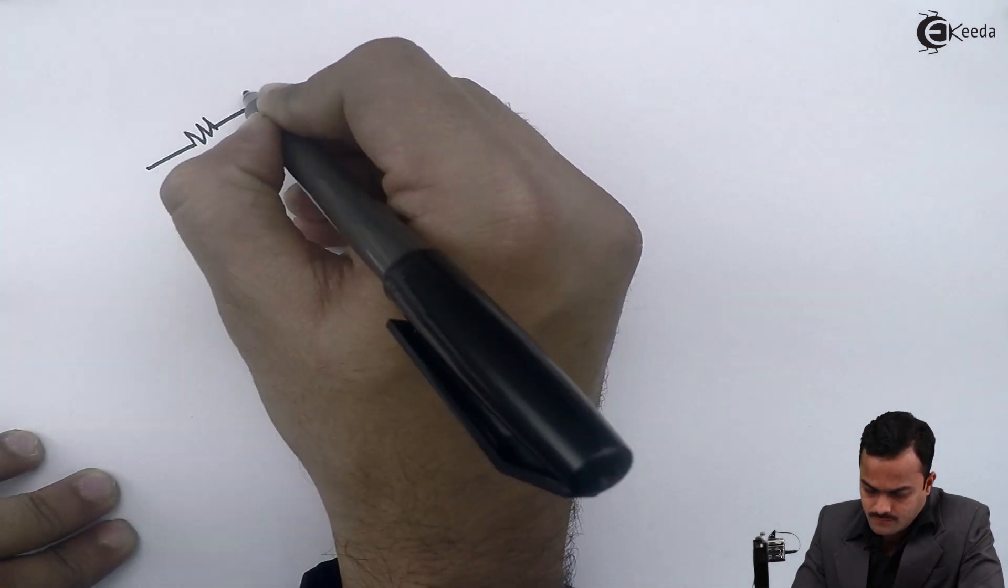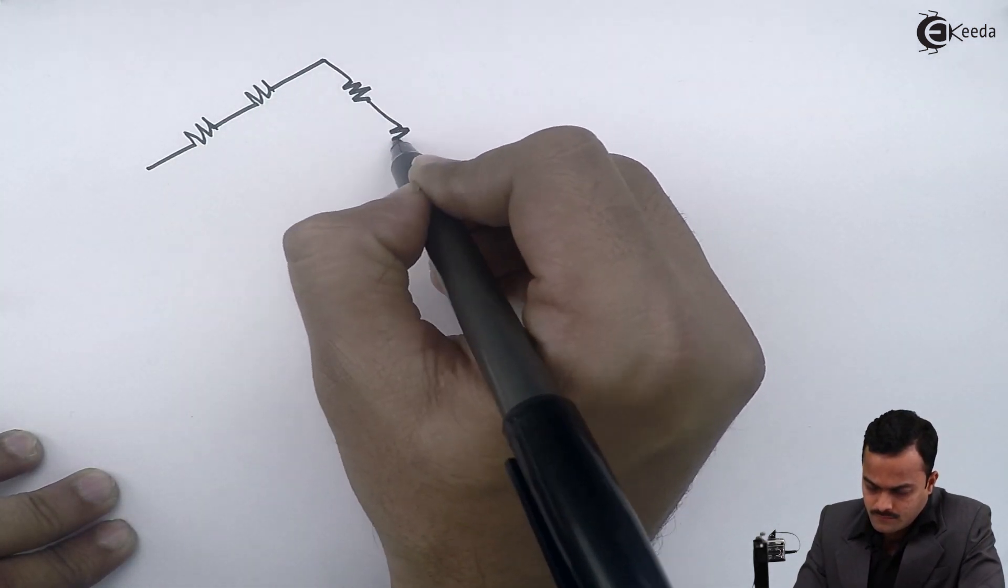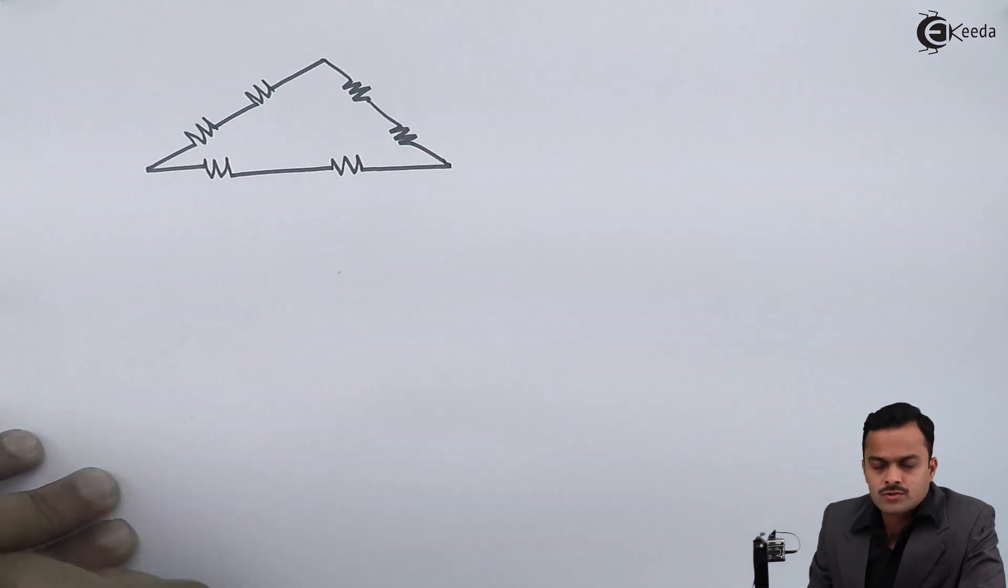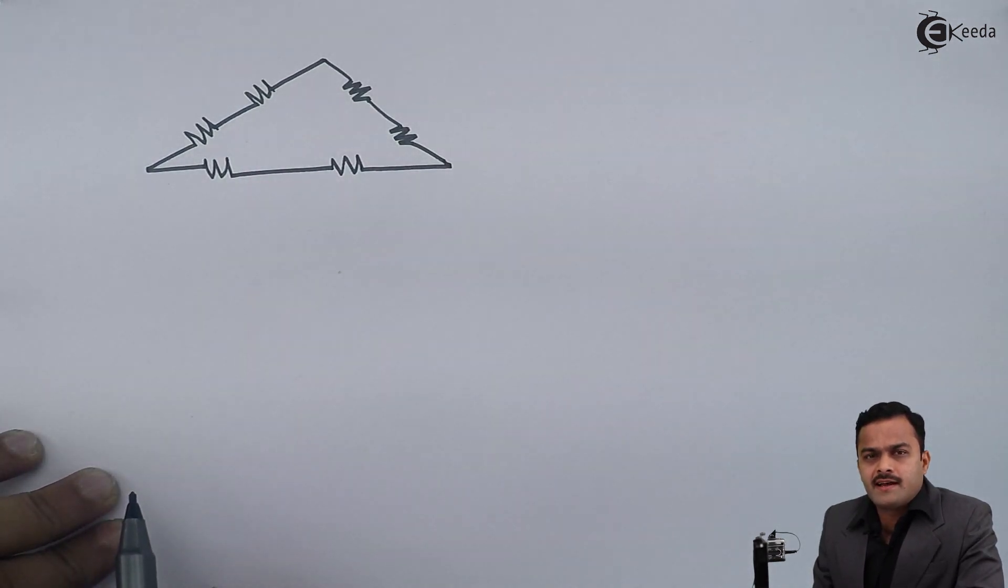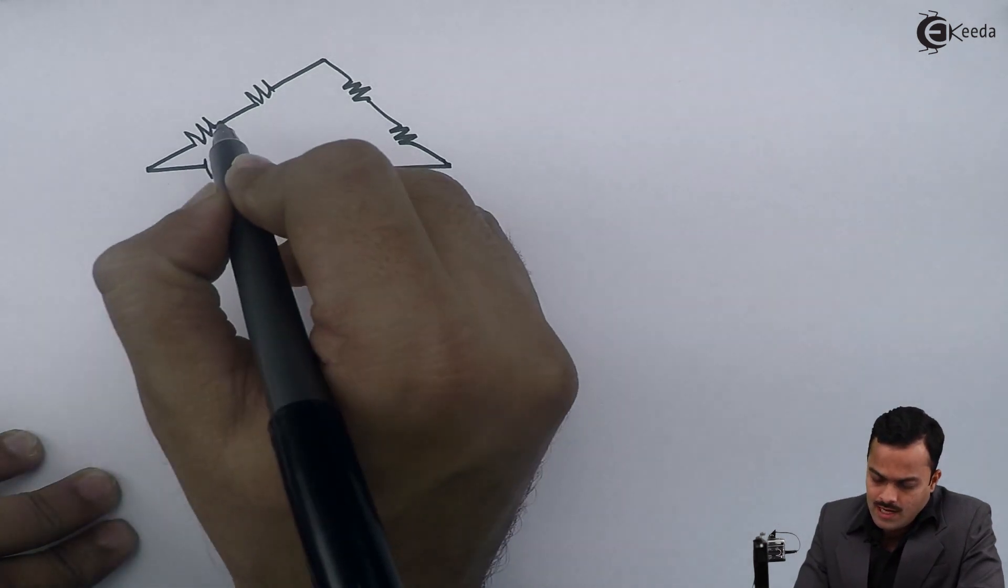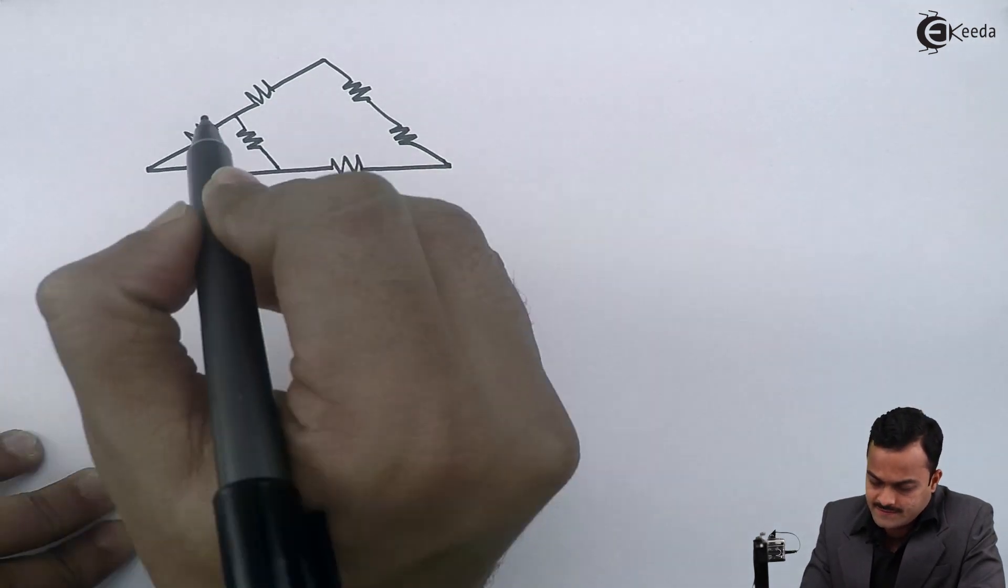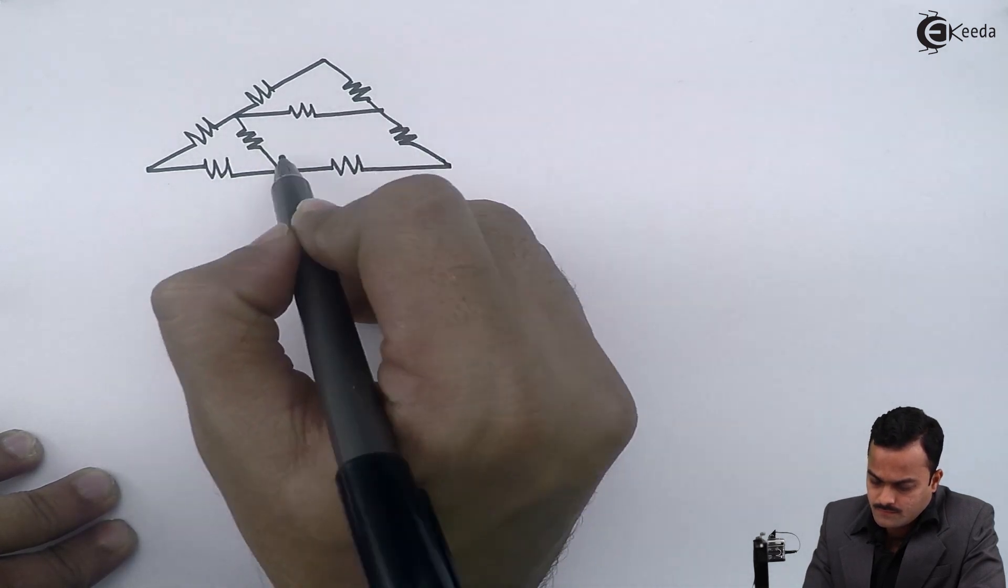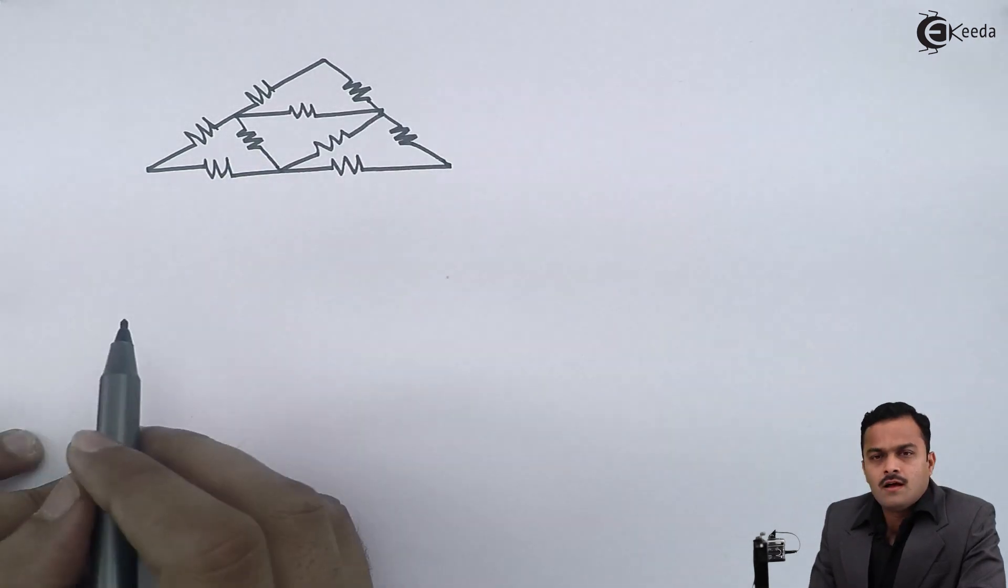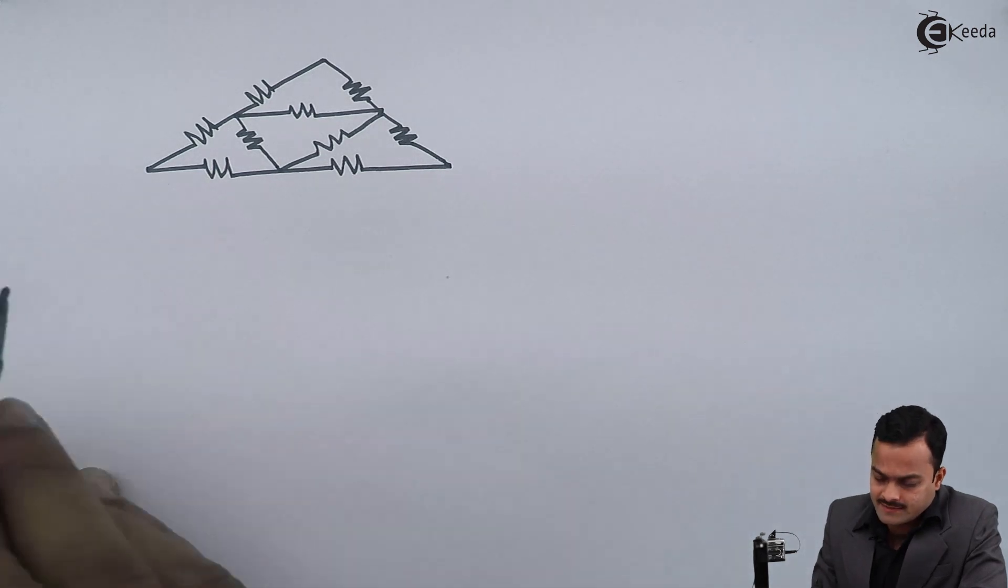Let's take a numerical problem where resistors are connected in series and parallel with one battery connected. So let me take an example. Here I have considered a triangular circuit like this having a number of resistors connected in series. Now I will have one more structure like this and to this structure there is a battery connected.